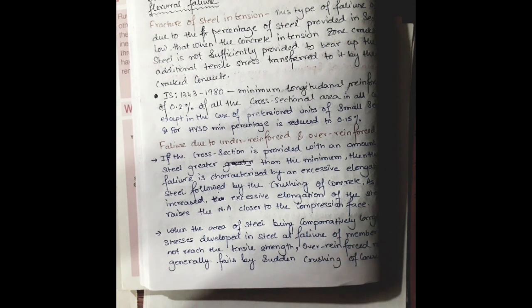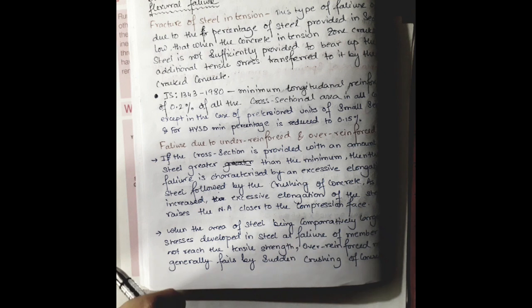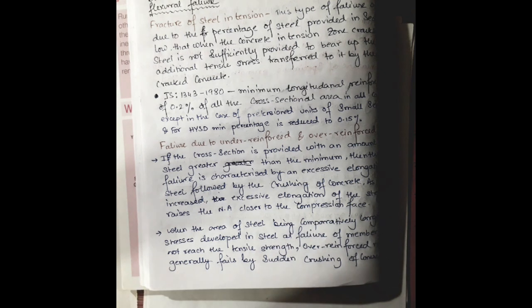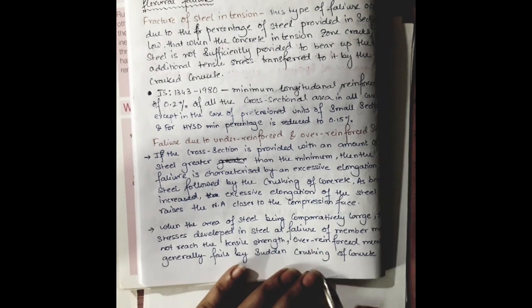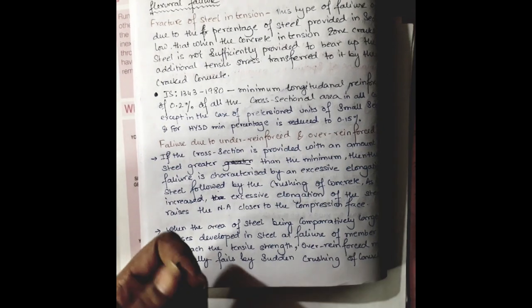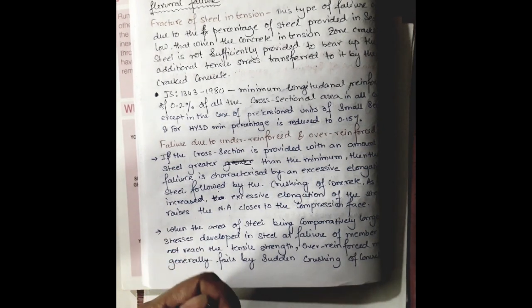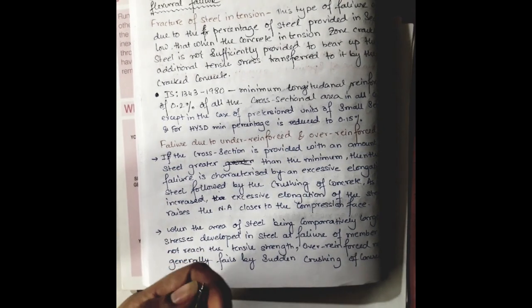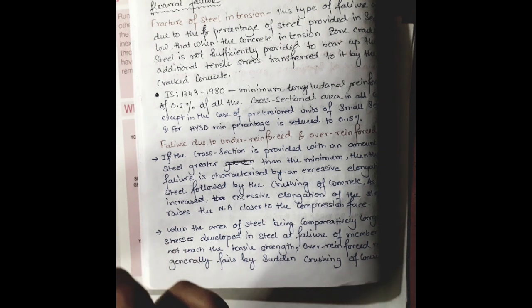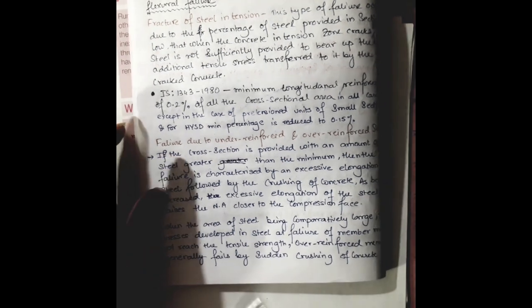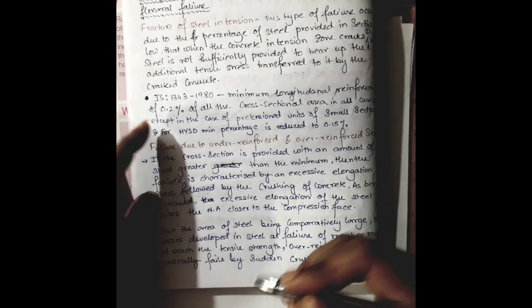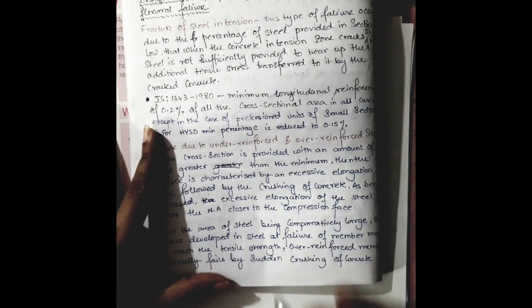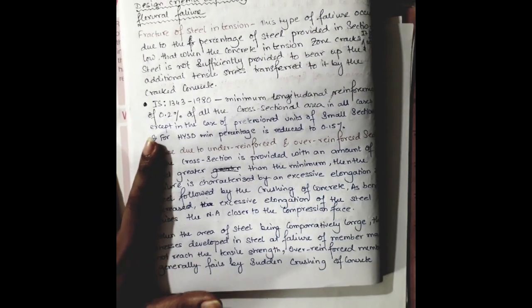Due to the lack of reinforcement provided in the section, an under-reinforced failure can occur. Due to the excess amount of reinforcement provided in the section in comparison to the cross section of concrete, where the strength cannot be compensated by the steel, the concrete has to take that strength and may fail earlier. These things we need to take into account before designing a pre-stressed concrete beam.